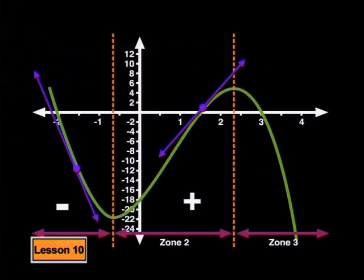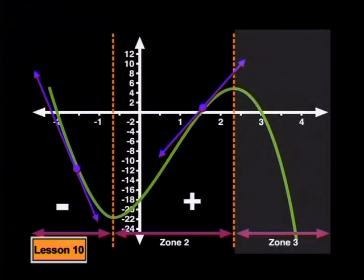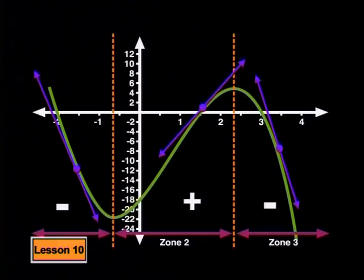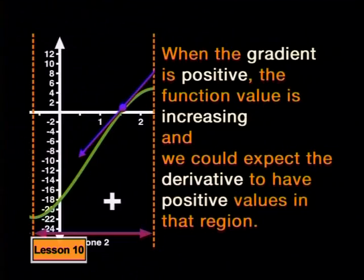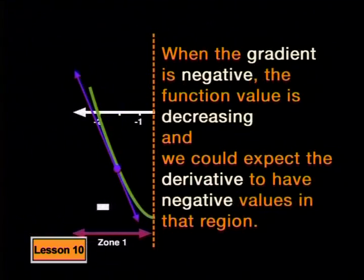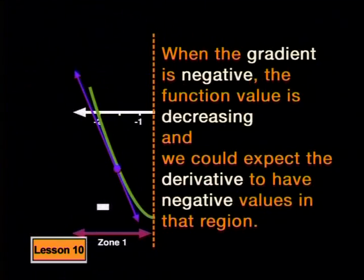And since the gradient of the tangent is given by the derivative, the derivative can help us predict when the function will be increasing and decreasing. Here in the region where the function value was decreasing, the tangent will have a negative gradient and so we would expect the derivative to have negative values for the x values in this region. So when the gradient is positive, the function value is increasing and we could expect the derivative to have positive values. And when the gradient is negative, the function is decreasing and we could expect the derivative to have negative values in that region. Well put, MacGyver.